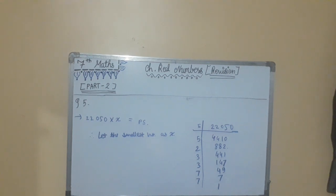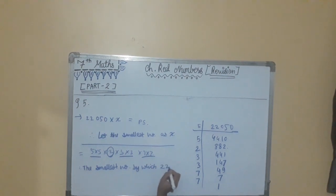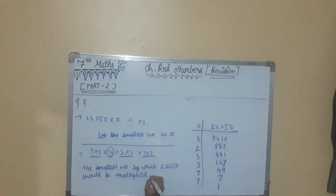Now we will write them: is equal to 5 into 5 into 2 into 3 into 3 into 7 into 7. Now we will make pairs. 5 into 5 is 1 pair, 3 into 3 is 1 pair, 7 into 7 is 1 pair. But 2 doesn't have any pair. The same value of 2 is not there. So therefore, the smallest number by which 2,2,0,5,0 should be multiplied is 2.